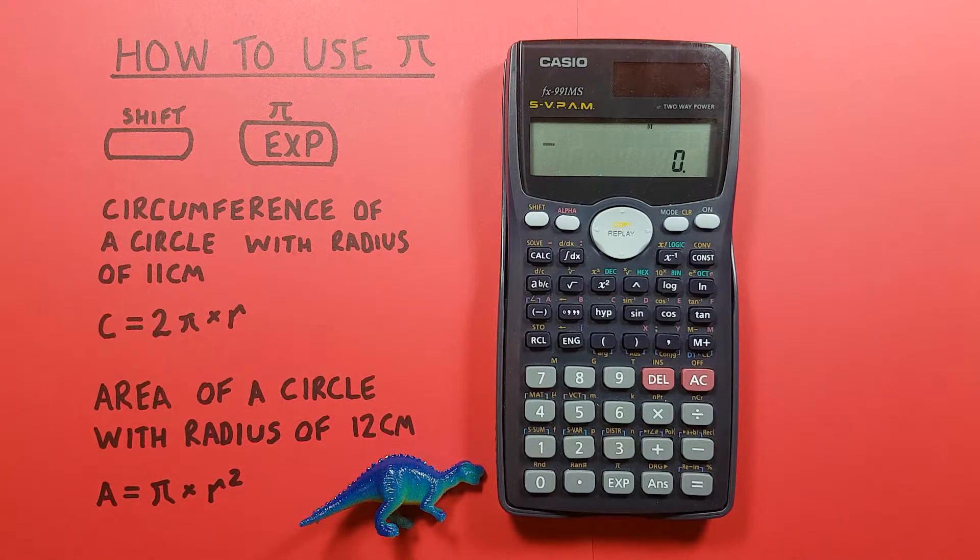Another example, we can find the area of a circle with a radius of 12 centimeters because again we know that the area is equal to PI times R squared.